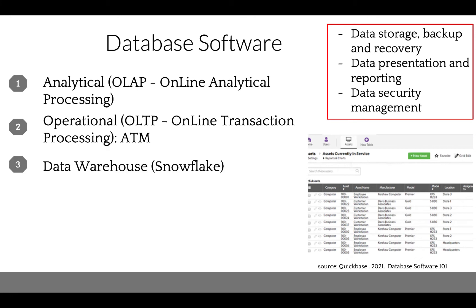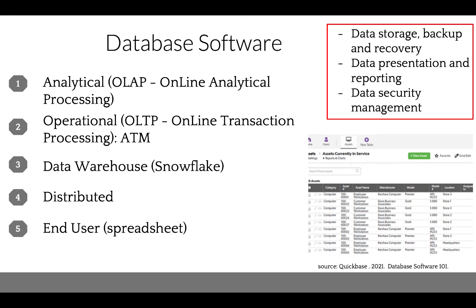A data warehouse is a central repository where data from multiple sources is processed and transformed. An example of it is Snowflake. A distributed database software is software distributed at various geographical locations. End-user database software is simply software that helps store data created by an end-user — examples include word processors and spreadsheets.